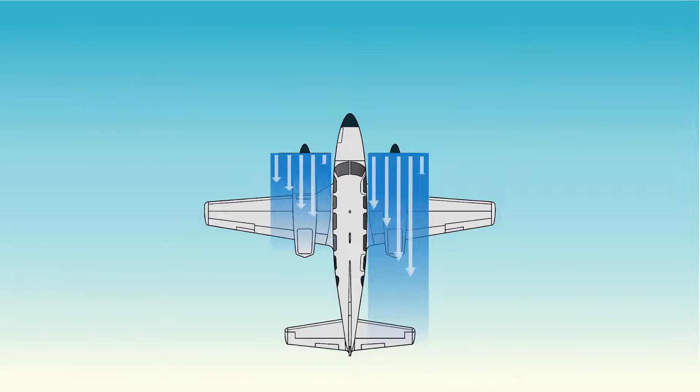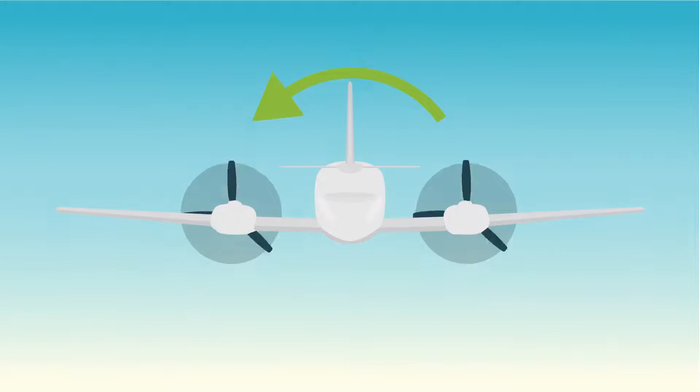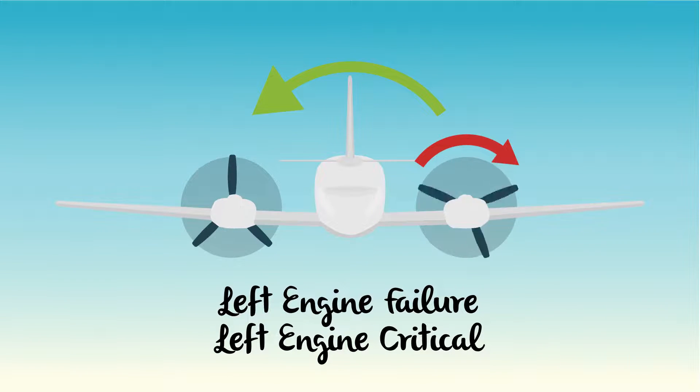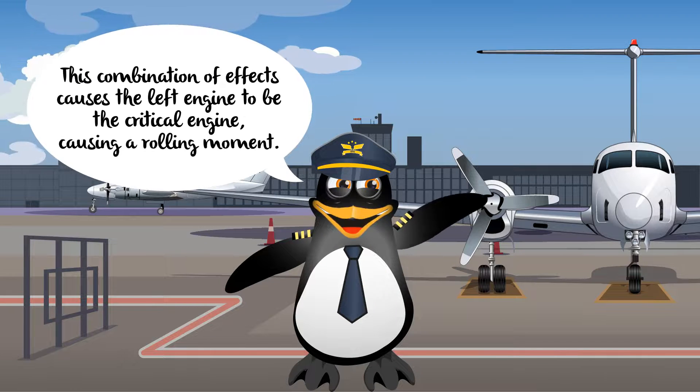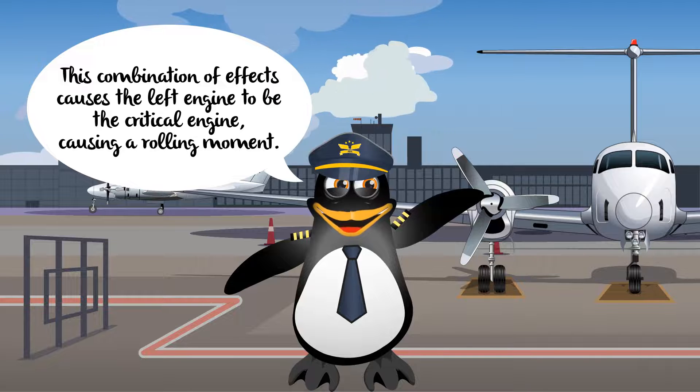If we look at the opposite engine out possibility, with the left engine inoperative and the left propeller windmilling, the asymmetric thrust from the right engine will yaw the aircraft to the left. The torque from the right engine will generate a rolling moment to the left. This combination of effects causes the left engine to be the critical engine, causing a rolling moment.